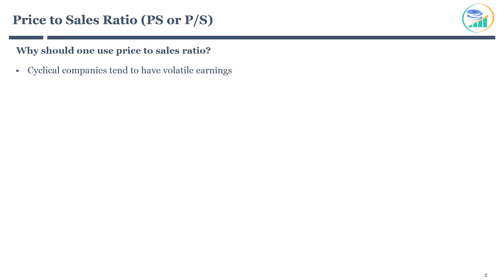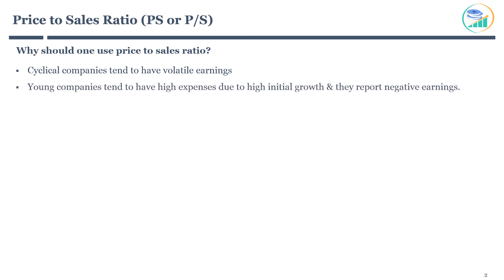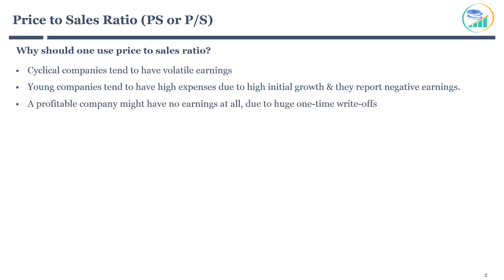Companies might have negative earnings primarily due to two reasons. First, young companies tend to have high expenses due to high initial growth, sales and marketing expenses, and they tend to report negative earnings. Second, a profitable company might have no earnings at all due to huge one-time write-offs. Hence, investors might prefer to use price-to-sales.